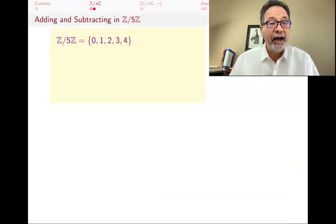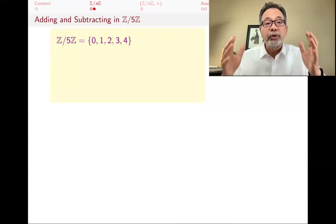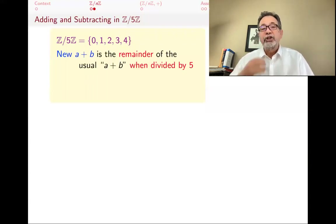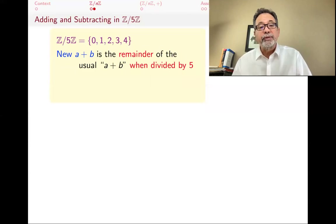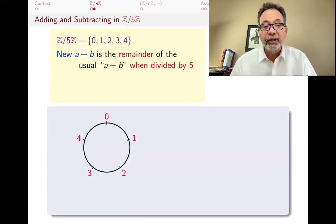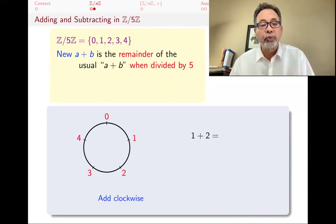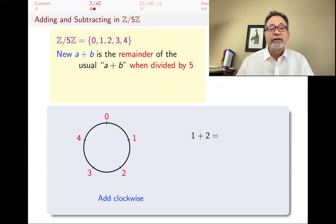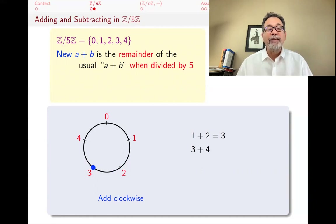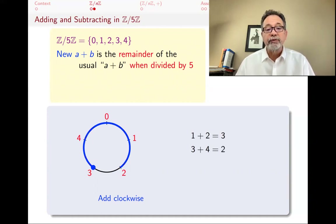Another example: Z mod 5Z, where n is 5. These are remainders when you divide by 5. The new a plus b is the remainder of the usual a plus b when divided by 5. One way to think about that is to put the numbers 0, 1 through 4 on a circle. Then this addition takes a visual meaning — when you want to add, you go clockwise. Here's 1, and you want to go 2 units clockwise, and you get to 3. So 1 plus 2 is 3. What's 3 plus 4? You start at 3, go 4 units clockwise, and you get to 2. So 3 plus 4 is 2.